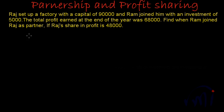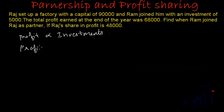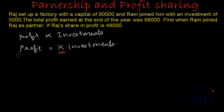The profit earned by a person will be directly proportional to his investments. That means the profit earned by a person will be equal to some K times investments. The value of this K will actually depend on the profit earned by the company or the business. But the profit earned by an individual will depend on his or her investment in the business.